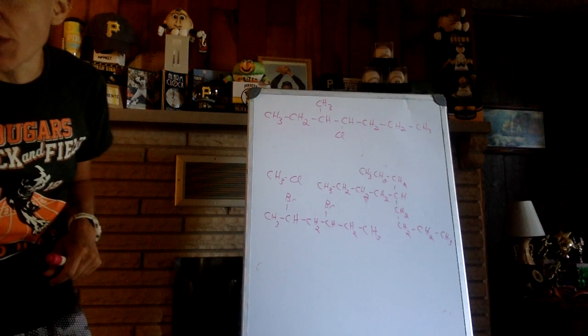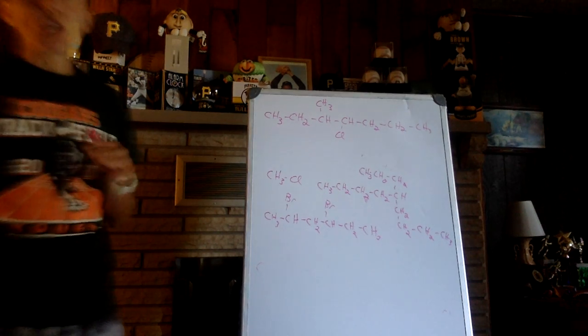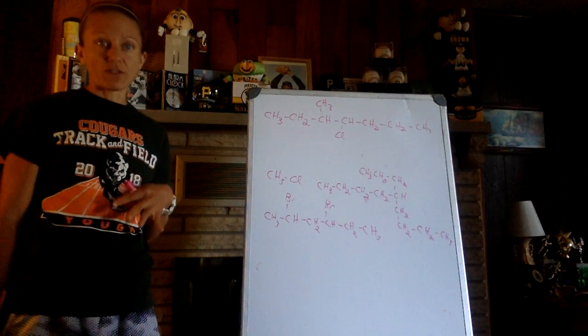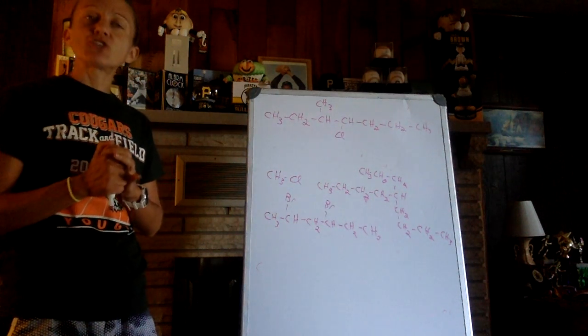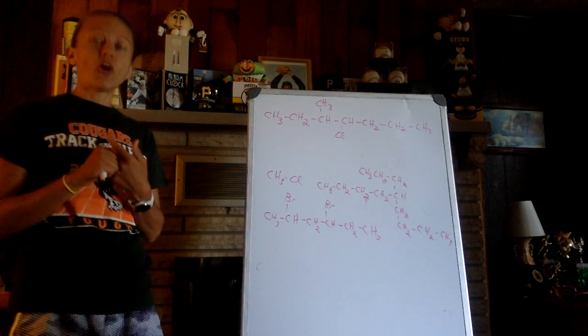If an alkane's a straight chain, we call it n or normal. Cycloalkanes are just these things as rings. Great. We won't do a lot with them in here. You'll see the names eventually, and all you do is you add cyclo to the number of carbons.